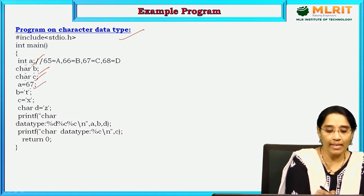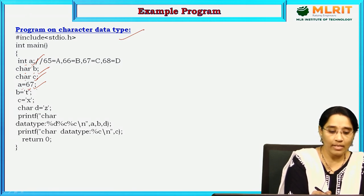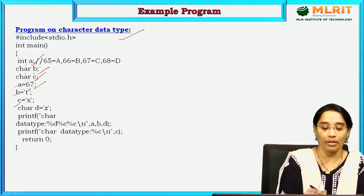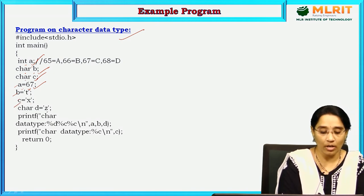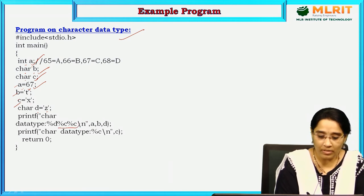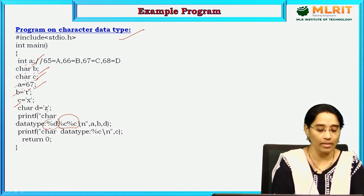Here is a sample program on character data type. int a is declared as integer, char b and char c are declared as character variables. a is assigned the integer value 67, 't' is assigned to b, and 'x' is assigned to c. We use format specifier %c to represent character data type and %d to represent integer data type.